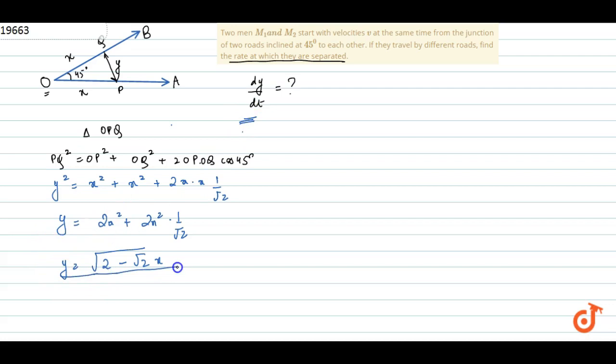This equation we will differentiate with respect to T. dy by dt, we get root of 2 minus root 2 times dx by dt.